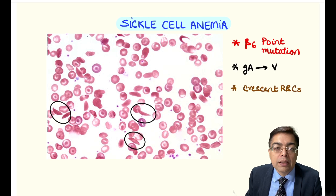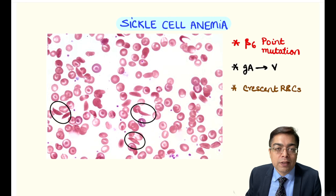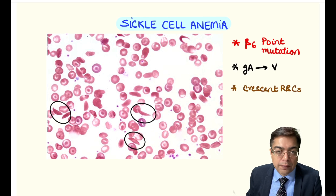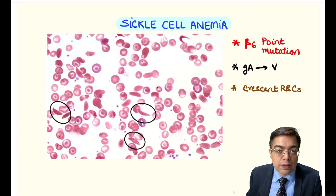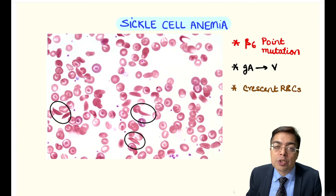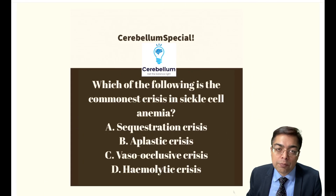These cells have increased mechanical fragility and decreased osmotic fragility. They are responsible for causing occlusion of blood vessels and entrapment in different organs, because of which patients experience symptoms.